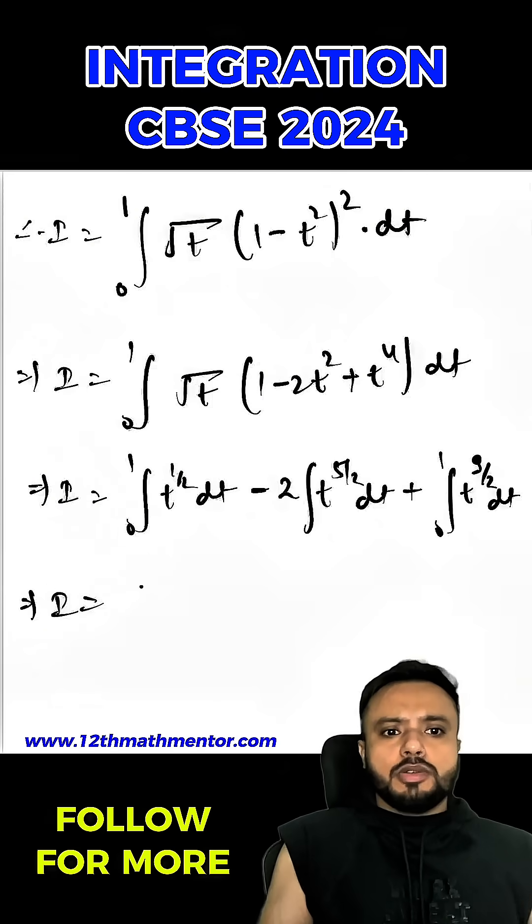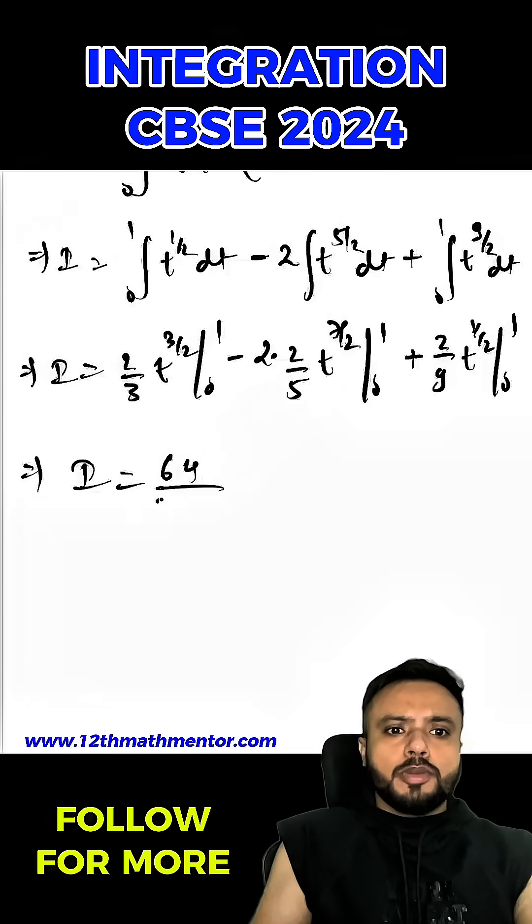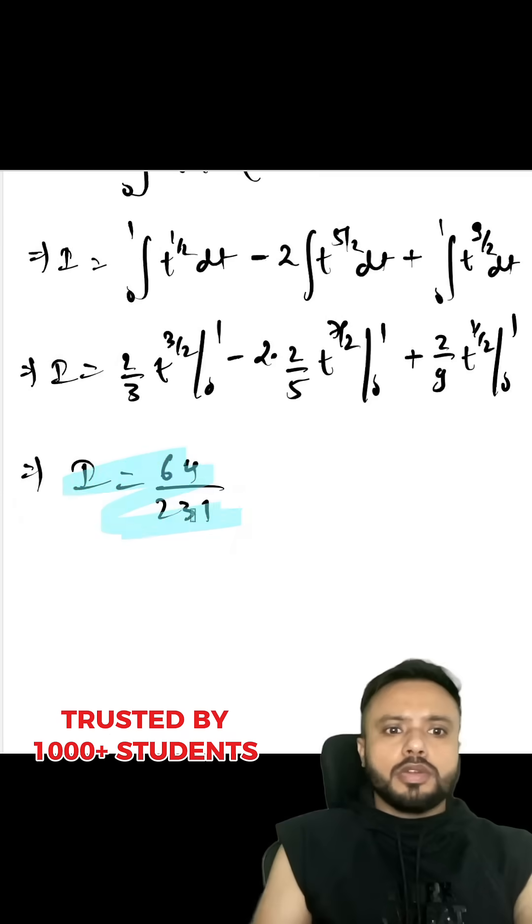So now I can integrate it very easily. So when you substitute the limit, you will get 64 by 231 as your answer. So this is the desired answer of my question.